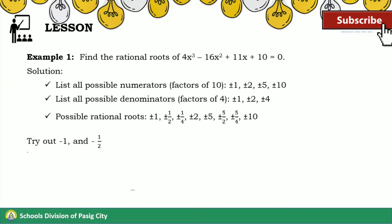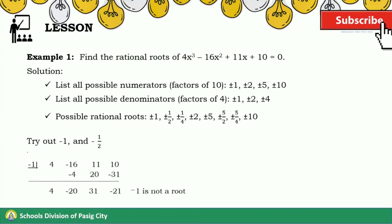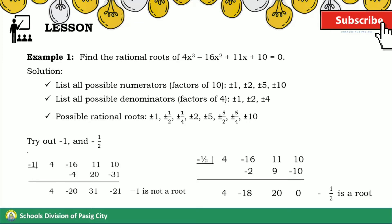Let us try out −1 and −½ from the list of possible rational roots. We can see from the synthetic division that the remainder after using −1 is not 0. Therefore, −1 is not a root of the polynomial. On the other hand, −½ gave us a remainder of 0. Therefore, −½ is a root of the polynomial.